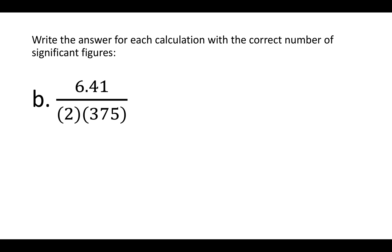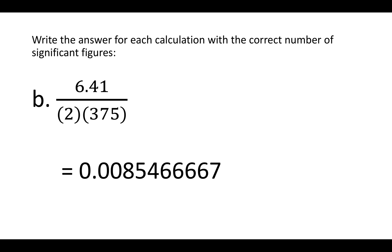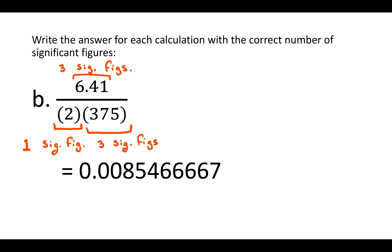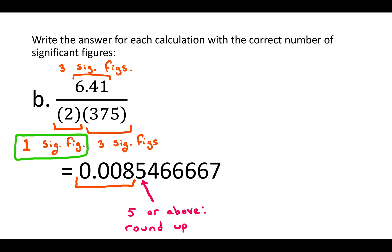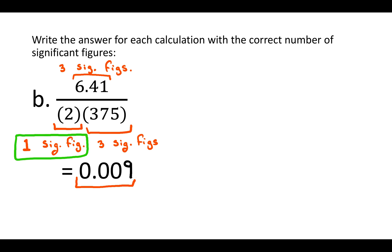Just do the calculation in a calculator — that should give you 0.00854666667. Now go back to the numbers you multiplied or divided together. The 6.41 has three significant figures. On the bottom, the 2 has just one significant figure, and 375 has three significant figures. The number with the fewest significant figures is the 2, which has only one sig fig. So we need just one sig fig in our answer — that would be where the 8 is. Those leading zeros are not significant because zeros to the left of non-zero numbers are never significant. Go to the digit just to the right of the 8; because that's 5 or above, we round up, and our answer will be 0.009.